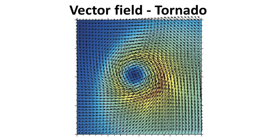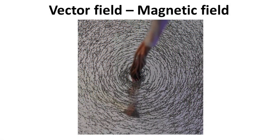In the case of fluid flow, such as the study of wind and tornados, these vector fields have a tendency to circulate, or rotate, as shown. The magnetic field produced by a current-carrying wire also circulates around the wire, as depicted by iron filings. Thus, the circulation of a vector field is an important concept, and it will be a very useful quantity if we can mathematically calculate it.